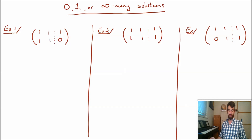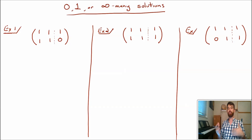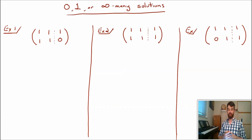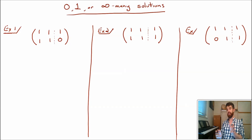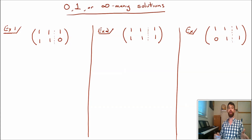Let's do the one on the left first. All three of these matrices look almost the same — they're a 2x2 system, meaning two variables and two equations, and they're mostly ones. You're going to see that it's really sensitive: small differences, like a 1 turning into a 0, can make all the difference between 0, 1, or infinitely many solutions.